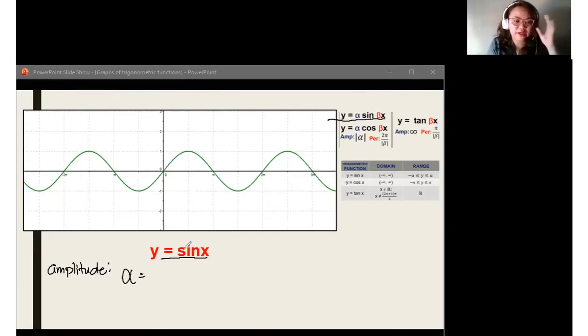Padaliin pa natin ng konti. Alpha here is the numerical coefficient of whatever the function is. So, alpha sine. Numerical coefficient ito. Let's say we have 3x. 3x muna. Sample lang ito. Just a quick review. When you have 3x, ano ang numerical coefficient ng 3x? Sige nga po. 3. Tama. Very good. The numerical coefficient of 3x is 3.